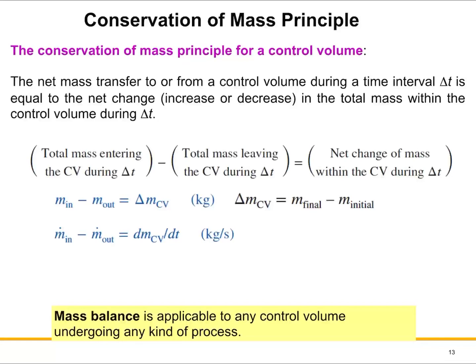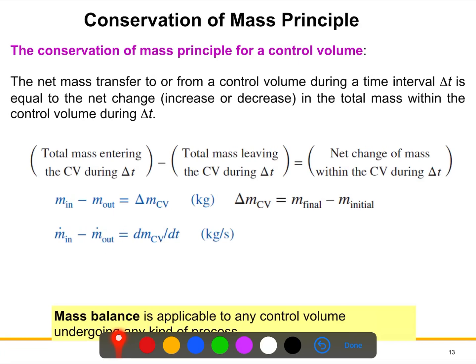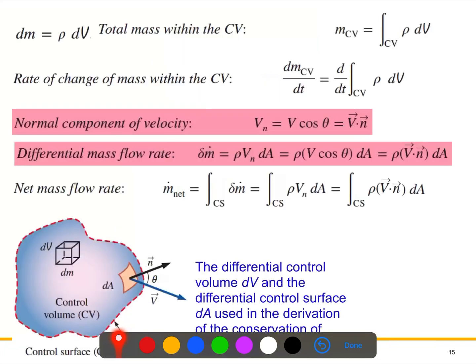Let's try to understand the conservation of mass principle, especially for a differential control volume and differential control surface. We already know that the rate of change will be the same — the input and output will be the same. The total mass entering the control volume during a time delta-t and the mass leaving — the inflow and outflow — equals the net change of mass in the control volume.